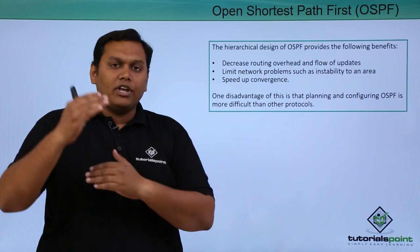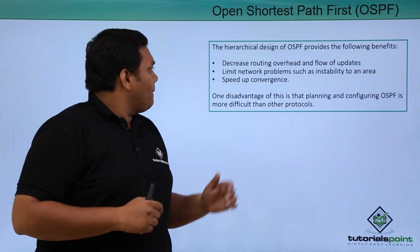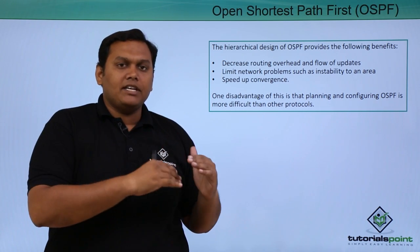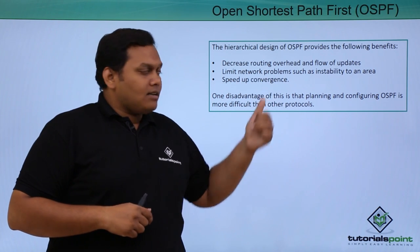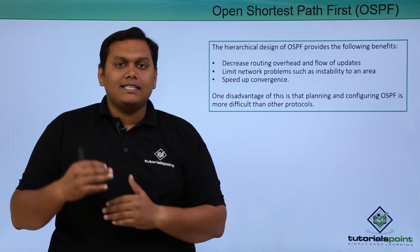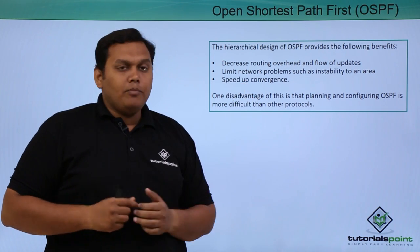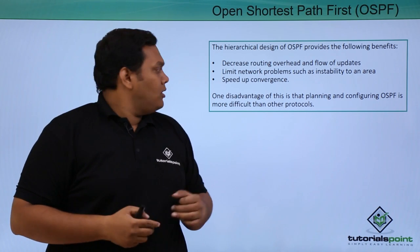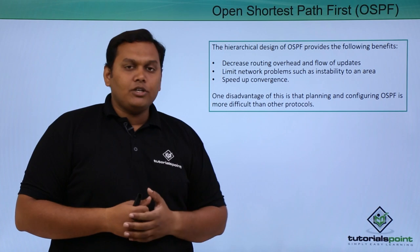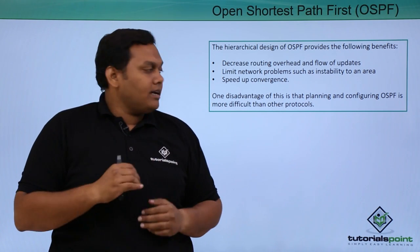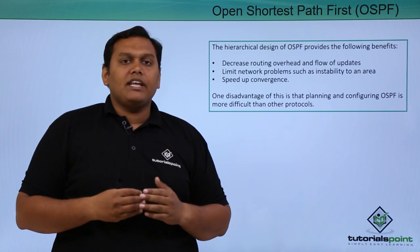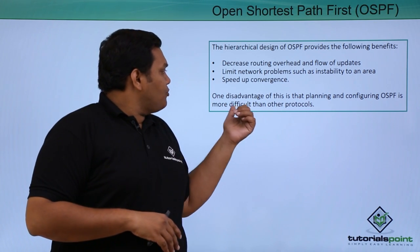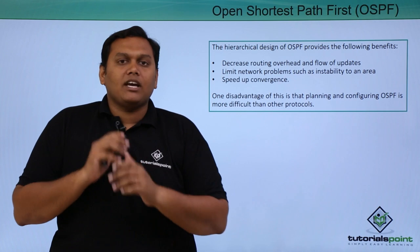The benefits of hierarchical design in OSPF include: decreased routing overhead and flow of updates, since OSPF maintains three tables — a neighbor table, topology table, and routing table. This reduces update frequency and limits network problems such as instability to a specific area, improving overall performance. It also speeds up convergence. One disadvantage, however, is that OSPF is more difficult to configure and more complex when compared with EIGRP.